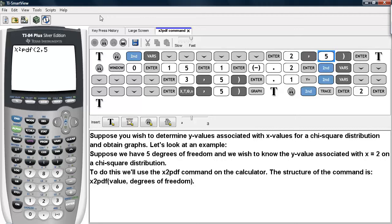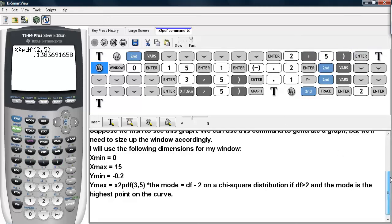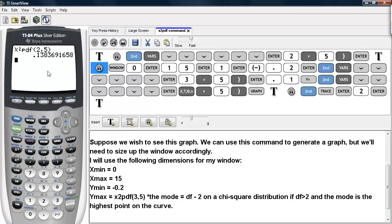And then the degrees of freedom. So the value is about 0.138, and suppose we wish to see this graph.